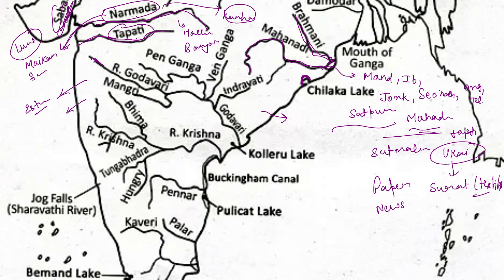Godavari is the largest river in Peninsular India and is also known as Dakshin Ganga. It originates from Trimbakeshwar in Maharashtra, then enters Telangana and then Andhra Pradesh. The lower Godavari splits into two branches. This region experiences heavy flooding because it receives both the southwest monsoon and the northeast monsoon.